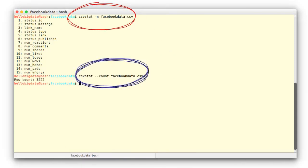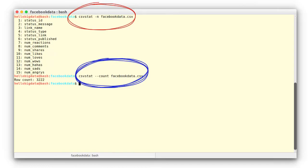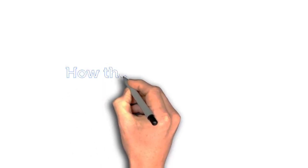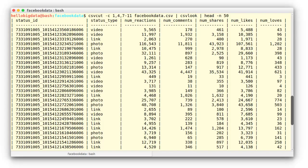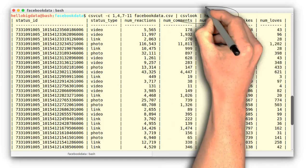How does the data look? This is often the first thing to do when you get your hands on new data. Previewing it is important to get a sense for what it contains, how it is organised, and whether the data makes sense in the first place. To help us get a preview of the data, we can use the command head, csvlook, and csvcut.